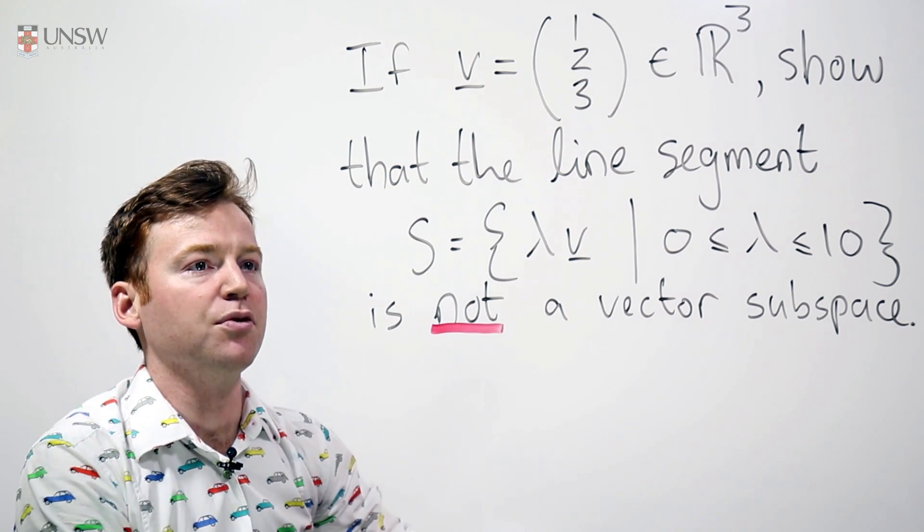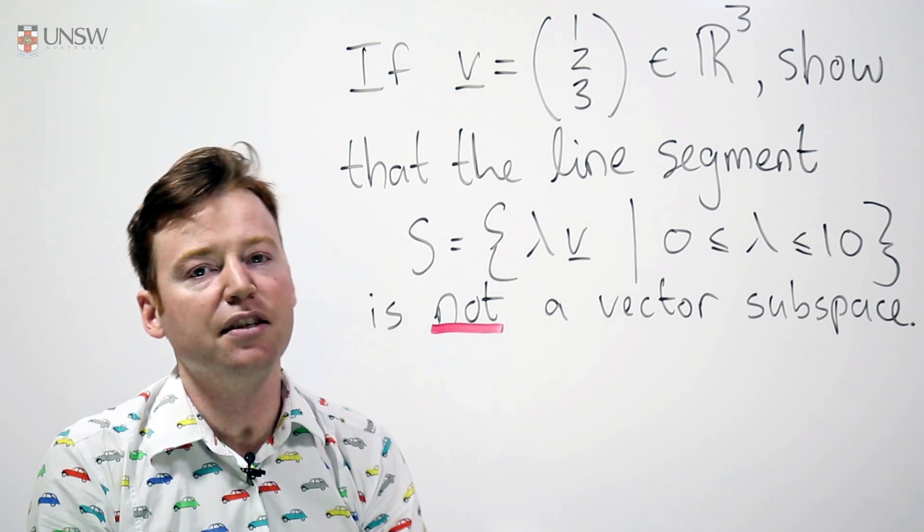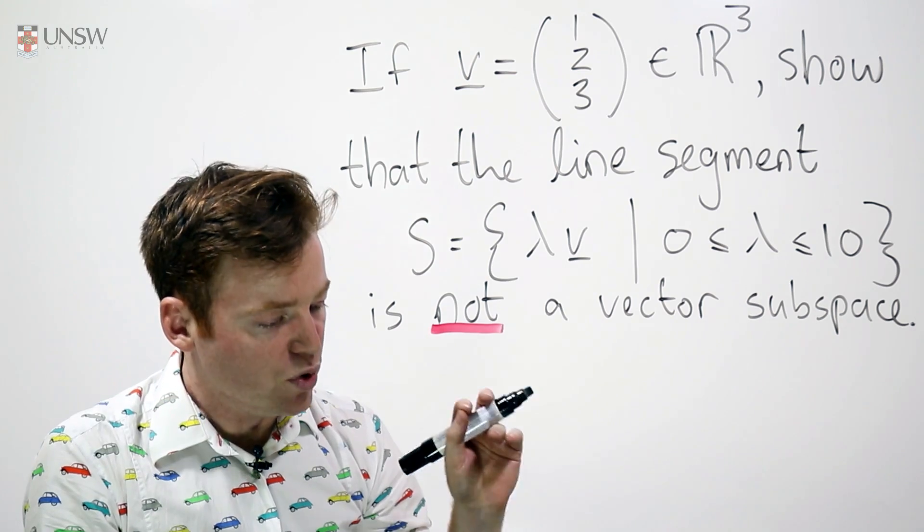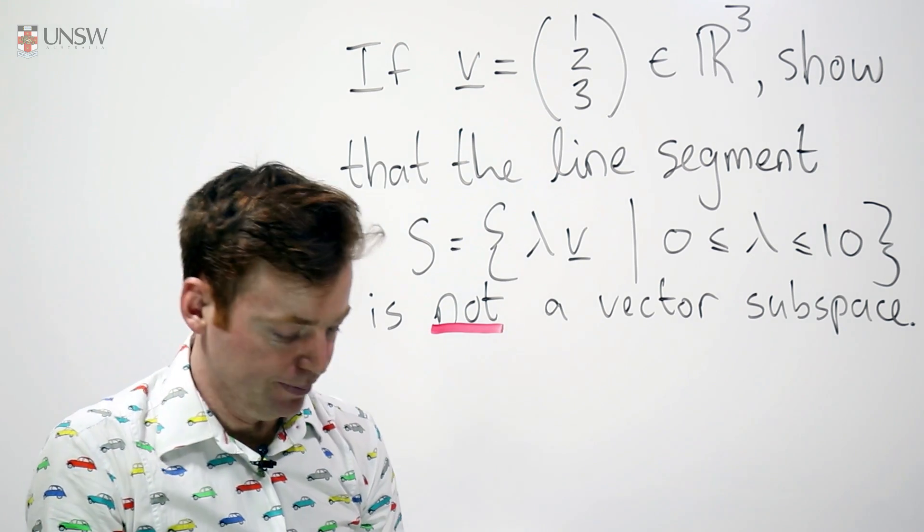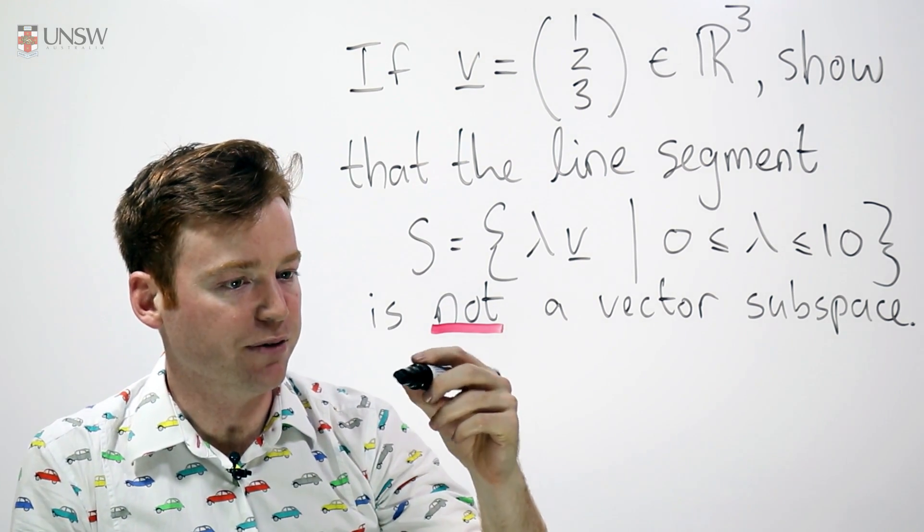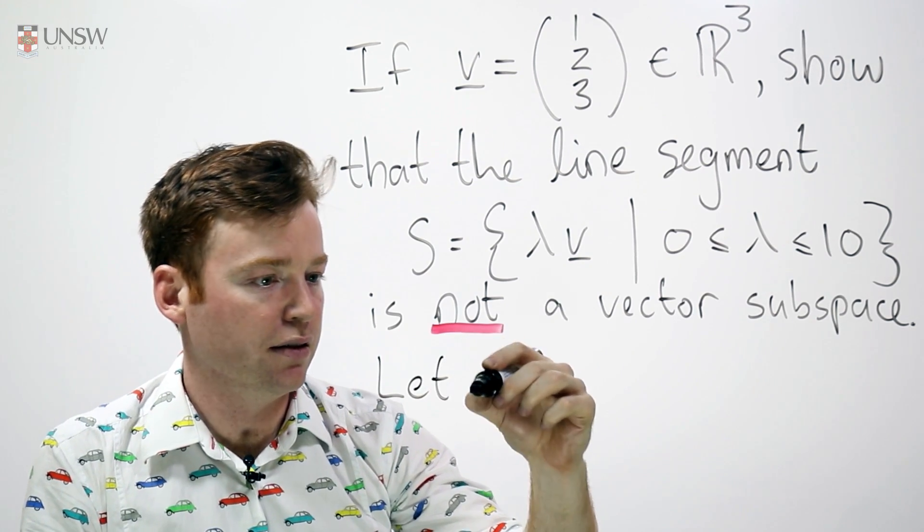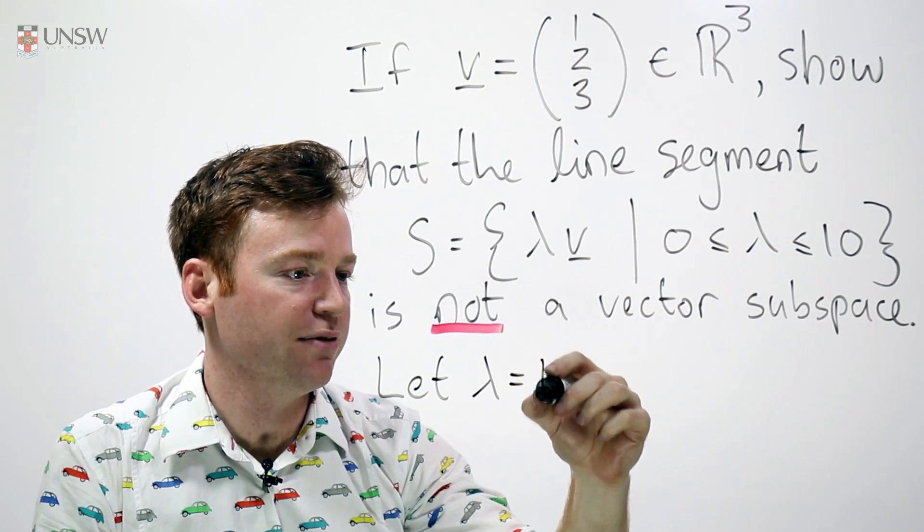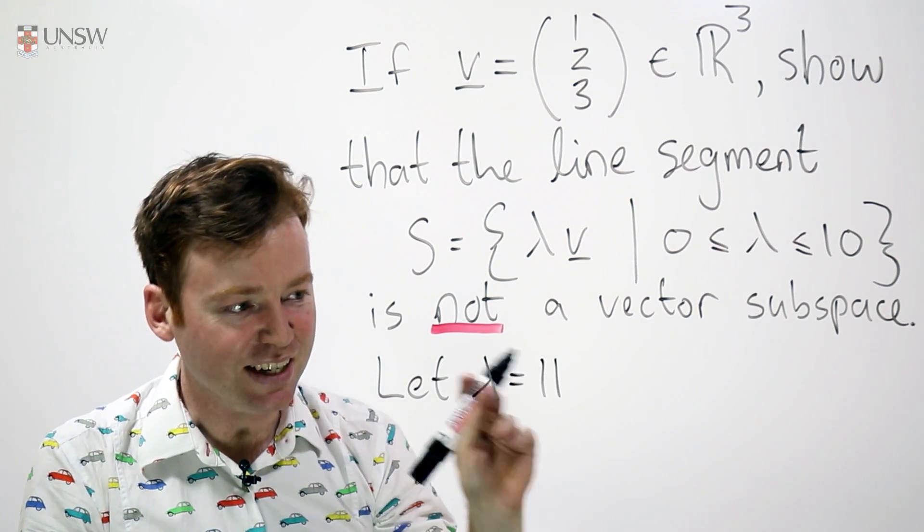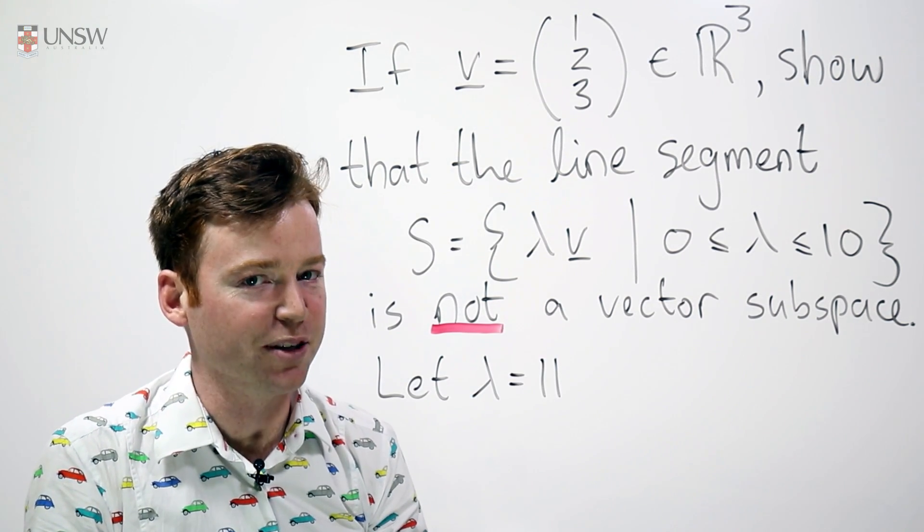You can't just do this in general for some arbitrary vectors and scalars. You need to be explicit about what you're doing. So, I'm going to be very explicit. I'm going to let lambda be equal to 11. There we are. 11. You don't get more explicit than that.